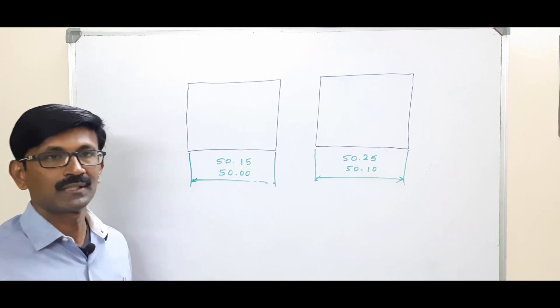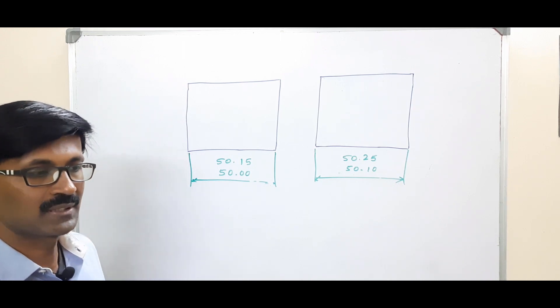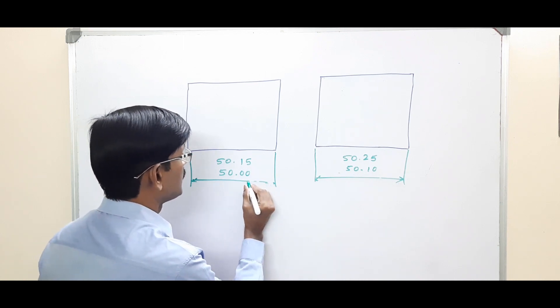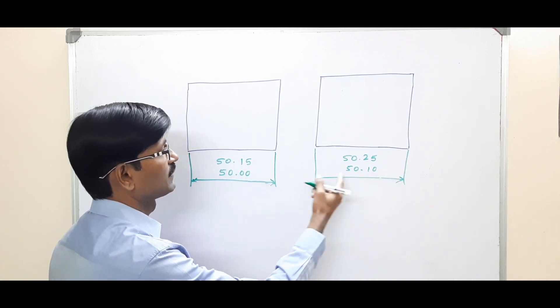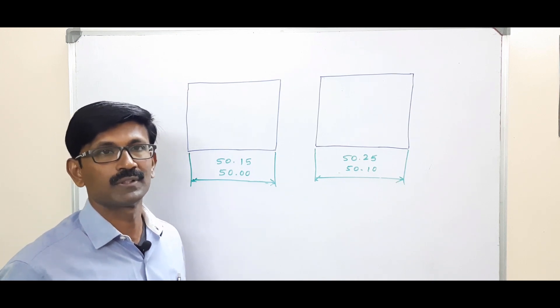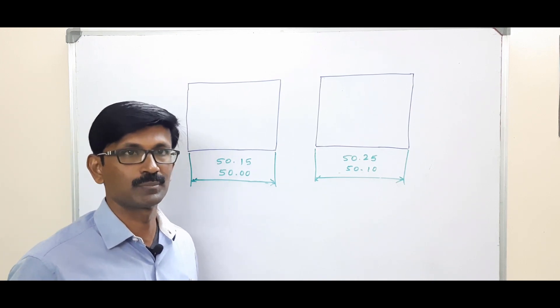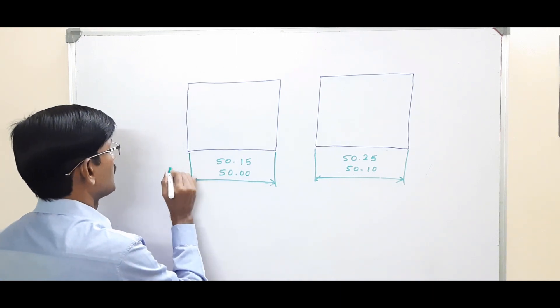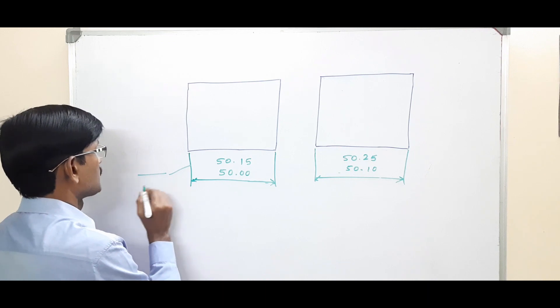So these are the different ways by which we can differentiate between metric system and inch basis system. But if you take this particular example where the dimensions are shown in the form of limit dimensions, then it will become very difficult for us to identify whether it is metric system or inch basis system. In those cases, what we have to do is see the geometrical tolerances.